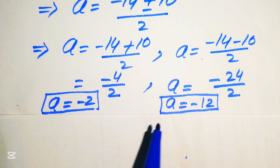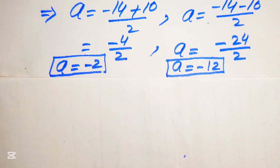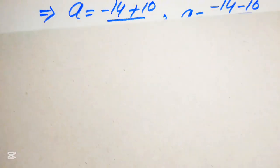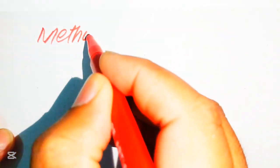So the final answers from Method 1 are a = −2 and a = −12. Now we move on to solve the same problem using Method 2. We copy down the original equation: (a + 7)² = 25.